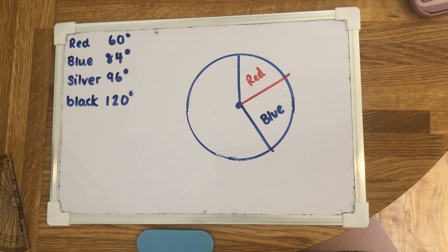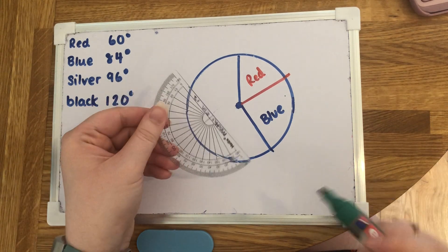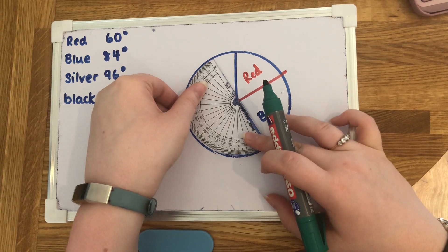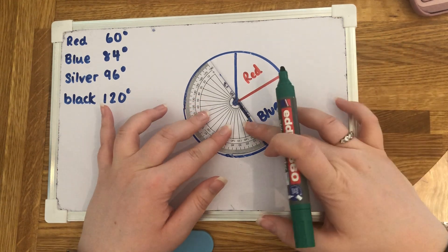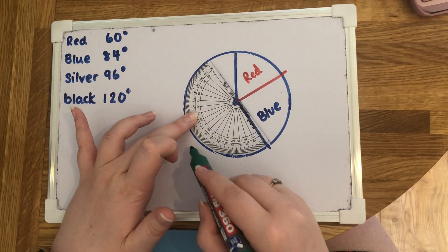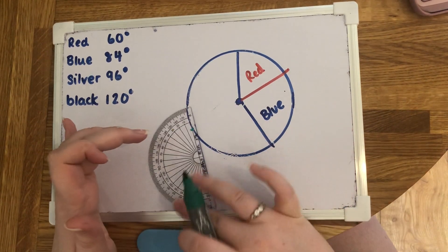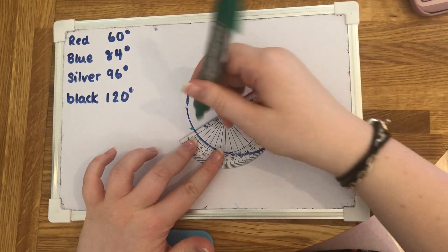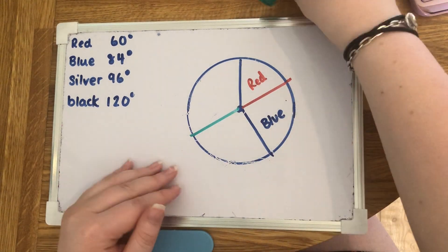Again I'm just going to draw a line from the middle to that line or little mark that I've made and then I'm going to label that blue. Then you just carry on doing exactly the same method. Again protractor is going to go in the middle, the zero is going to go in line with the blue line that I've just drawn. This time it's 96 so we're going to look at where 96 is. I'm going to draw the line, connect it from the outside to the middle and then label it silver.